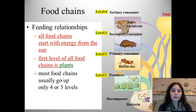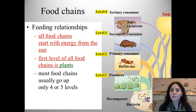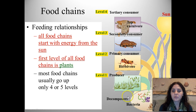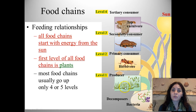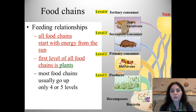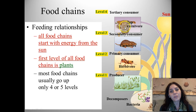Food chains only go up about four or five levels, because at each level we lose almost 90% of the energy to waste. So we have our sun giving energy to our producers, or the plants, which give their energy to herbivores, who give their energy to carnivores, who give their energy to top carnivores.